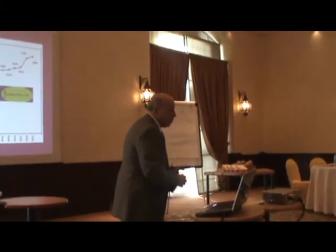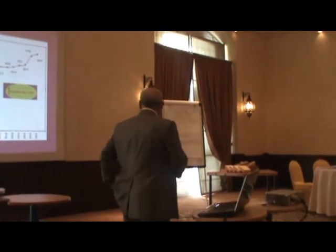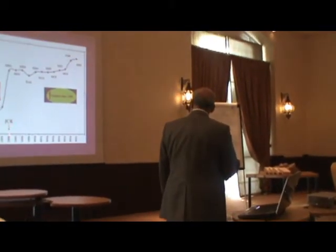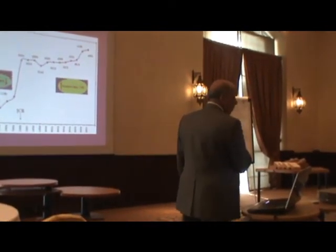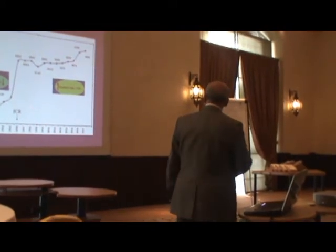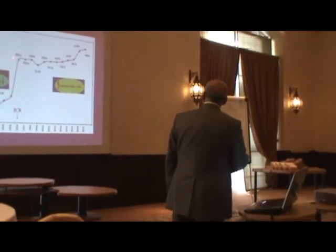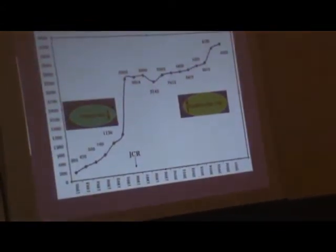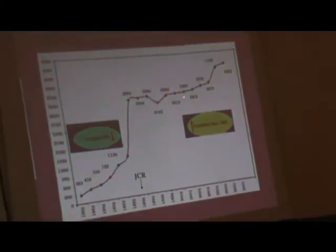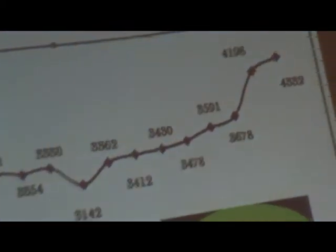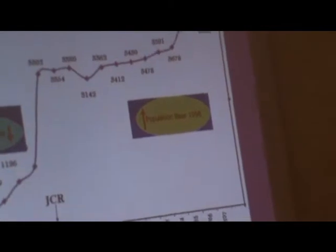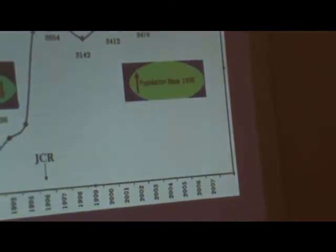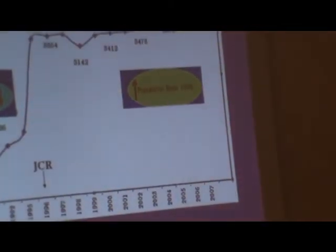According to the Jordan Cancer Registry, which started in 1996, before that we had inaccurate data from hospitals. When the registry started in 1996, the total number of cancers in Jordan was 3,300, and now it has increased to 4,300. So there is a general pattern of increase of all types of cancer in the region of about 25%.